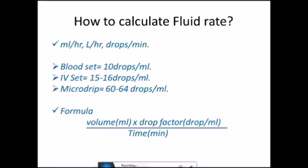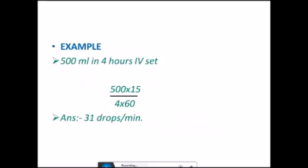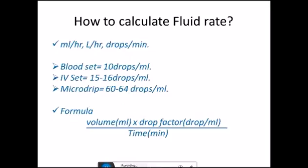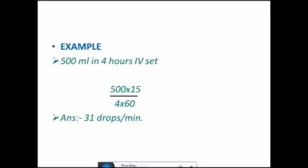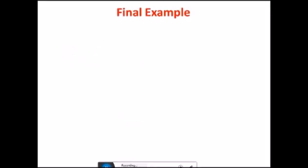How to calculate fluid rate? Fluid rate can be calculated in ml per hour or liters per hour or drops per minute. Simply, the blood set, the IV set, and the micro drip set we get in our wards have some drop factors. Blood set is 10 drops per ml, IV set is 15 to 16 drops per ml, and micro drip is 60 to 64 drops per ml. The formula to calculate the rate is volume in ml multiply by drop factor divided by time. Let us see the example: if you want to give 500 ml of fluid in 4 hours through IV set, then you have to use the formula. Volume is 500 ml, drop factor is 15, and the time in minutes is 4 hours multiply by 60. This comes out to be 31 drops per minute over 4 hours.